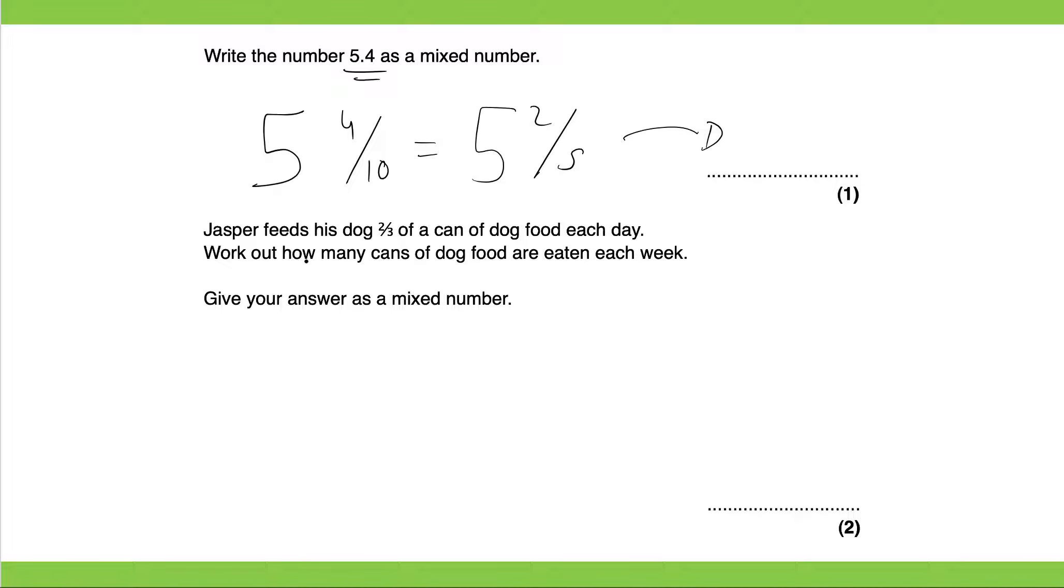Okay, Jasper feeds his dog two thirds of a can of dog food each day. Work out how many cans of dog food are eaten each week. Give your answer as a mixed number.